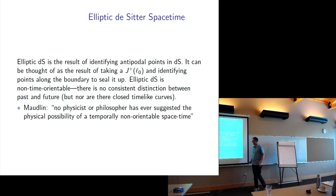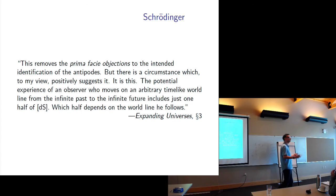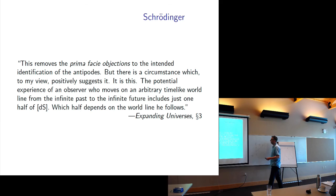Lachlan's quote: 'No physicist or philosopher has ever suggested the physical possibility of a temporally non-orientable spacetime.' That's not strictly speaking true — Schrödinger talks about this. He first says you may be worried because there will be closed timelike curves, then argues that there aren't. He says that removes the objection to the identification, but there's a circumstance which, in his view, positively suggests it.